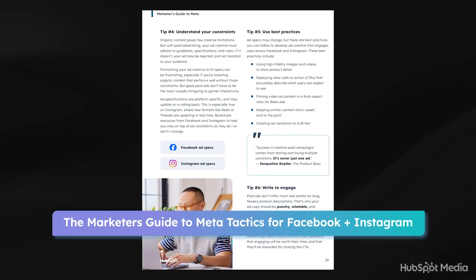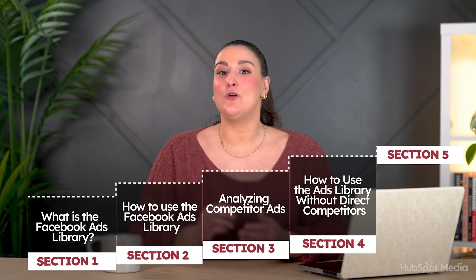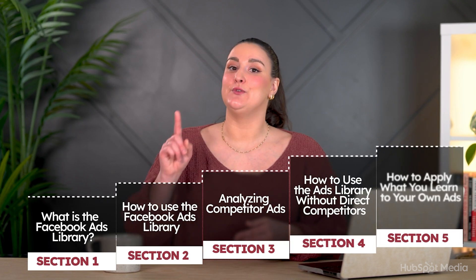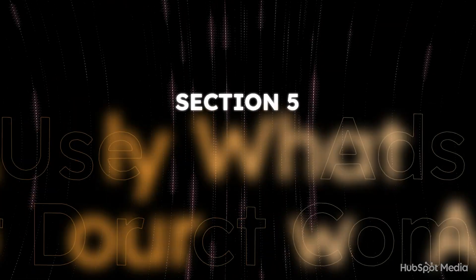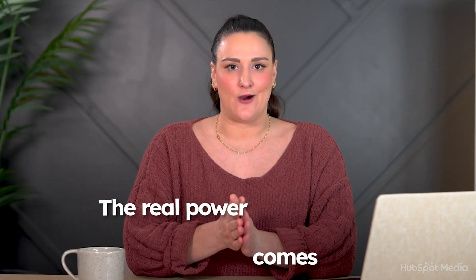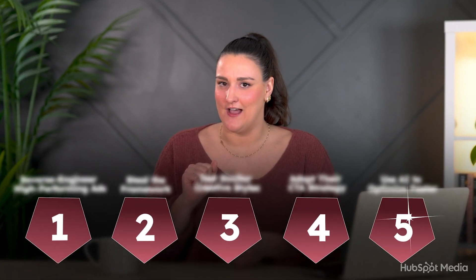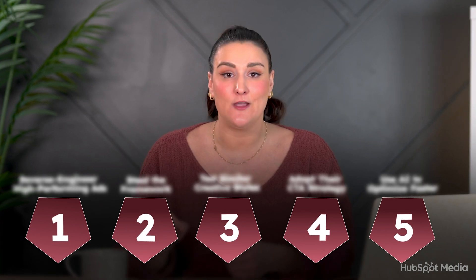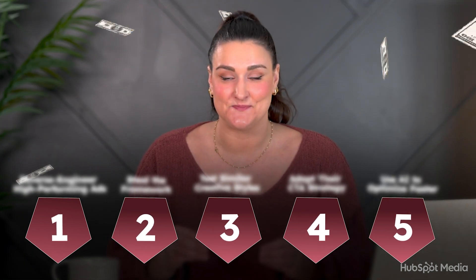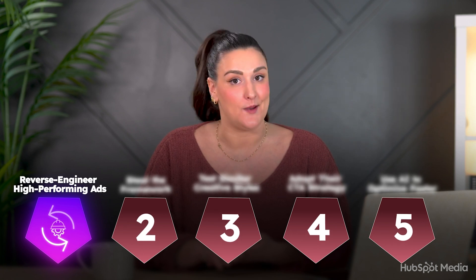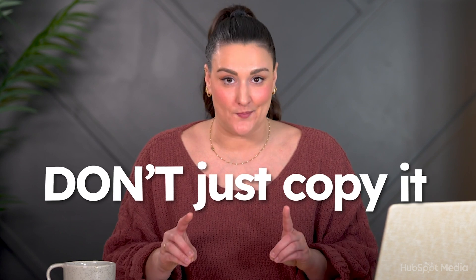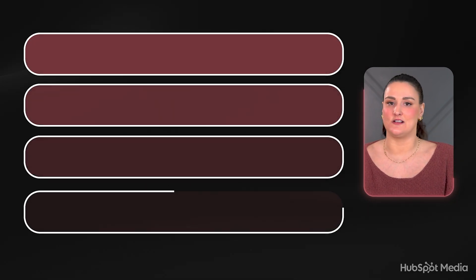So I've shown you how to find competitor ads. Now let's take it a step further and turn that research into your best performing ad. It's one thing to see what competitors are doing, but the real power comes from adapting those strategies to your brand. There are five steps to this — stick around for number five because it is the number one mistake people make with Facebook ads that costs them thousands. Step one is to reverse engineer high-performing ads. If you see an ad that's getting a ton of engagement, don't just copy it. Recreate the formula so it works for your audience.